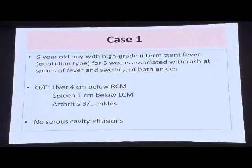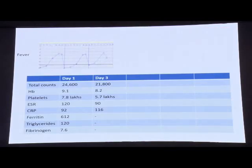A 6-year-old boy presented with high-grade intermittent fever for three weeks, associated with rash at fever spikes and swelling of both ankles. He had hepatosplenomegaly and arthritis of both ankles with no serious cavity effusions. On day one of his hospital stay, he had neutrophilic leukocytosis, elevated platelets, high ESR, high CRP, ferritin of 612, and triglycerides of 120.